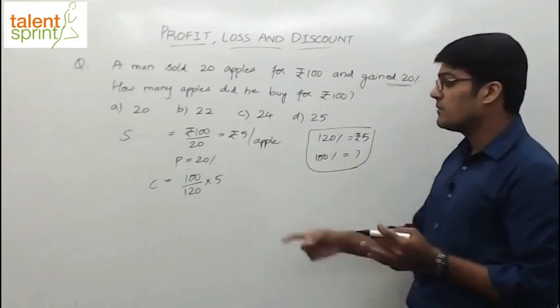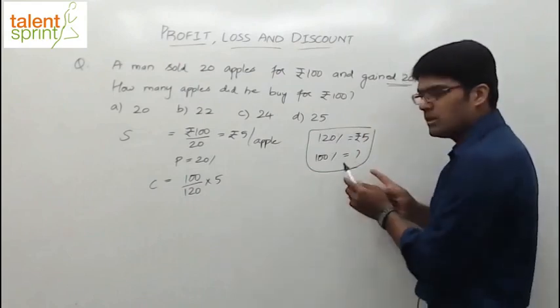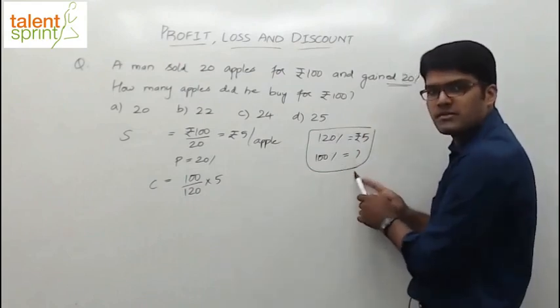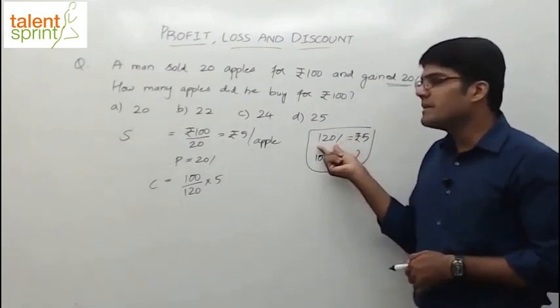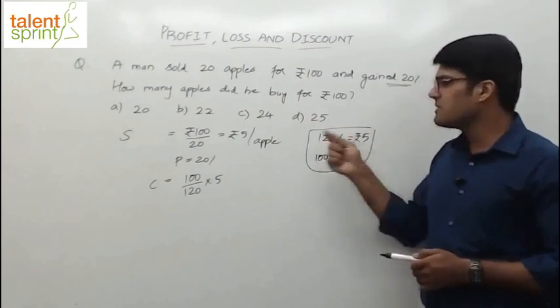This is what I am trying to do there. You might get confused. How do you write that directly? All the profit and loss problems we are solving are based on this. Cost price is 100 percentage. That has to be calculated. If the profit is 20 percentage, selling price will be 120 percentage. 120 percentage is 5.